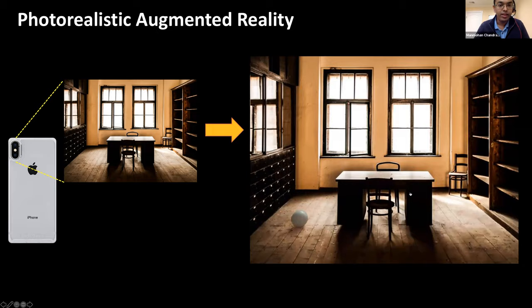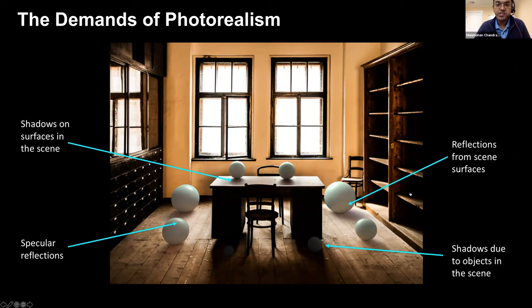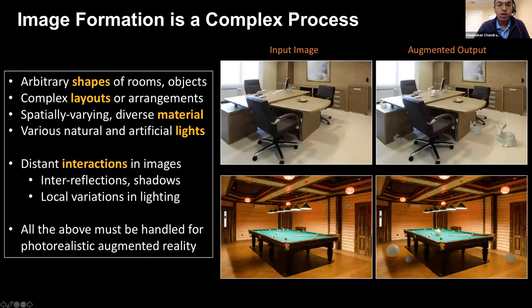Achieving photorealism in such images is challenging. Inserted objects must exhibit specular highlights or cast shadows on other objects, and objects themselves might be in shadow or receive light bouncing off different surfaces. All of these effects arise due to a complex underlying image formation process involving shapes in arbitrary layouts with diverse materials illuminated by various light sources, along with inter-reflections and shadows as local variations in lighting.